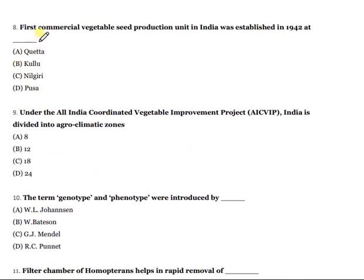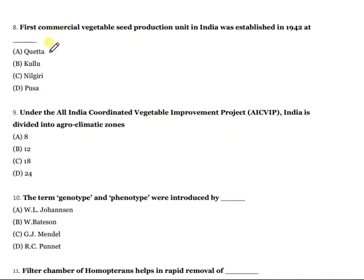Question 8: The first commercial vegetable seed production unit in India was established in 1942. The right answer is option A.